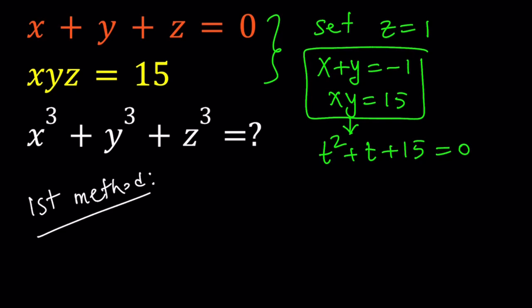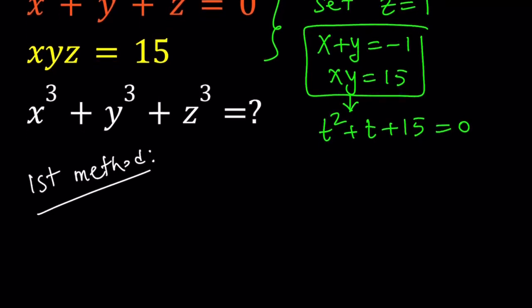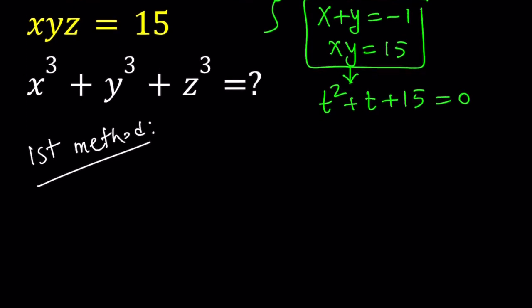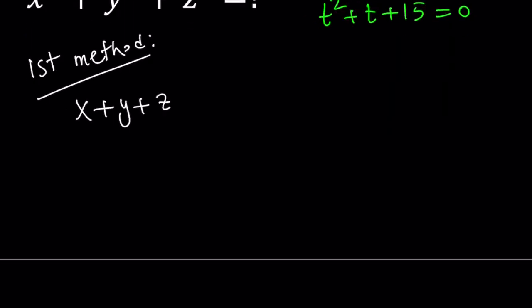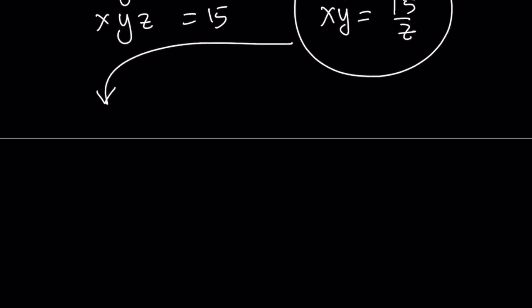So for my first method, I'm going to consider a quadratic system, but this time I'm not going to replace z with anything. Since we have x plus y plus z is equal to 0 and xyz is equal to 15, we can safely say that x plus y is equal to negative z and xy is equal to 15 over z. So this also gives us a quadratic equation. Let's go ahead and write that by using Vieta's formulas.